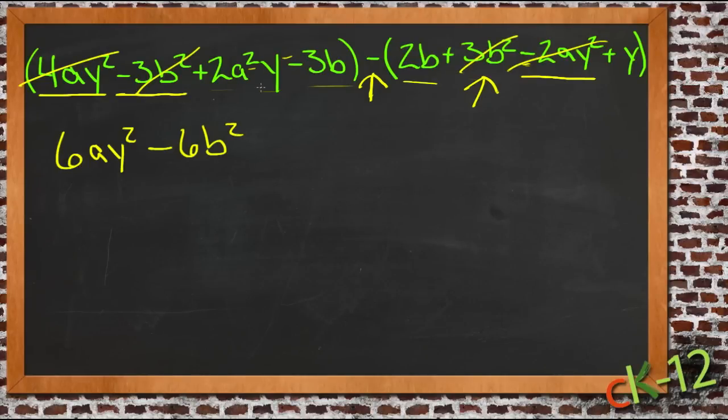And then we have 2a squared y right here. And there aren't any more of those. Those are the only ones. So that just stays. 2a squared y. And that's taken care of.